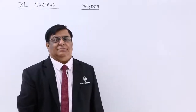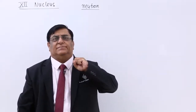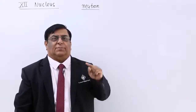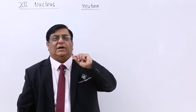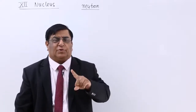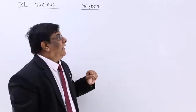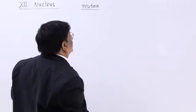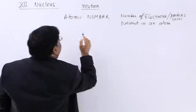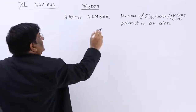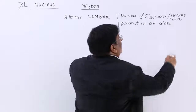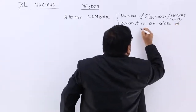Inside the atom, at the center is the nucleus. While studying hydrogen, we found the positive charge particle is there and we call it proton. The number of protons and the number of electrons are equal, and we gave them a number we call atomic number. Atomic number is the number of electrons or protons present in an atom of the element.